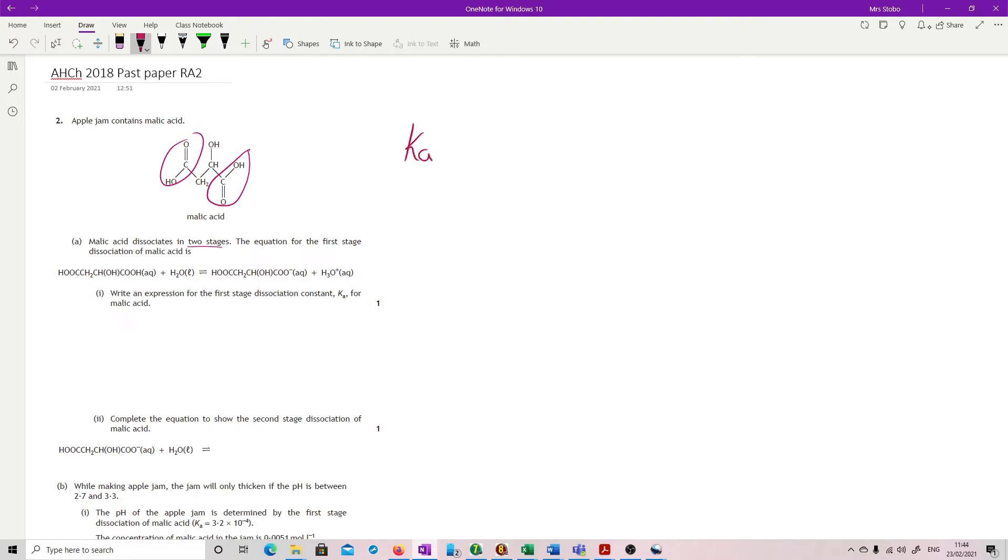So that is a bit of a gift. So Ka is we've got the concentration of our hydronium, multiplied by the concentration of a very long, but you have to write the whole thing, over our original, so again rather long. Concentration of. That's it.